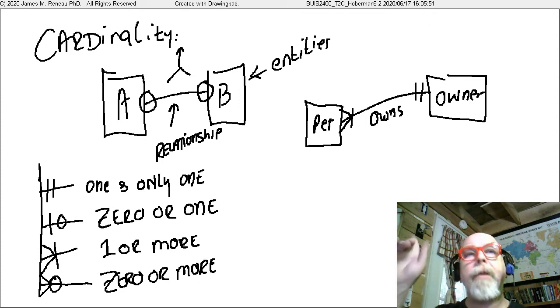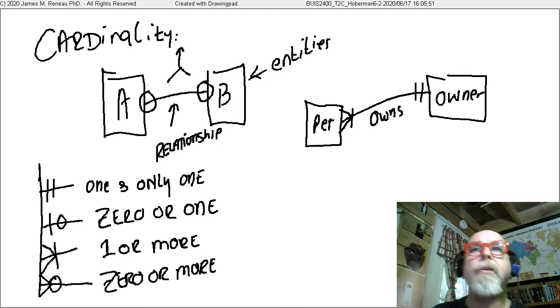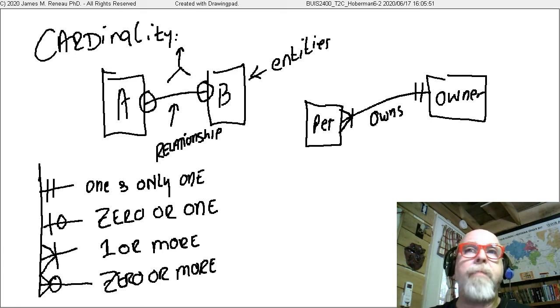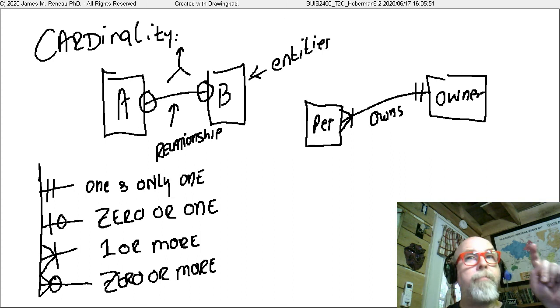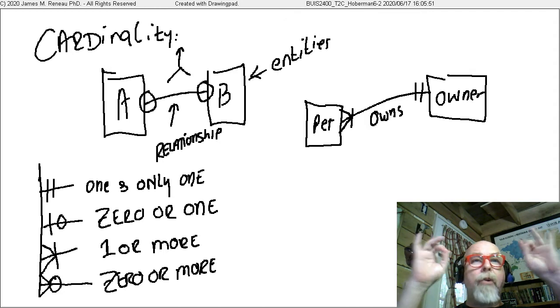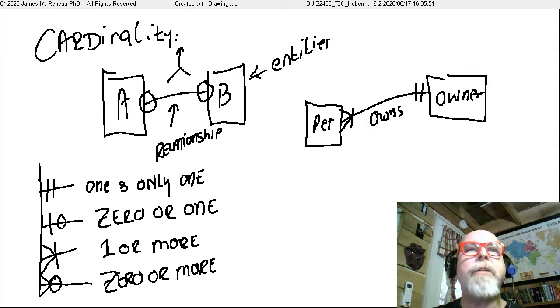So let's talk about the diagram first. Up here in the top, you can see that I have two entities. An entity is a rectangle. And I put the entity name A and B. A relationship would be a line between the entities. And the ends of the lines, where we're going to put our crow's feet, represent the cardinality between the two entities, represent the relationship between the two entities, represent the rules between these two entities.